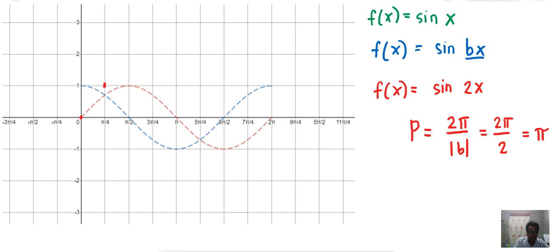So ang itsura na ngayon ng graph is dito. Dito. Dito. So na-compress na yung isang buong cycle. Yung isang buong cycle, dito na lang sya sa period na ito, from 0 to π.